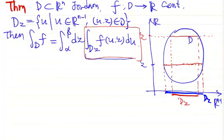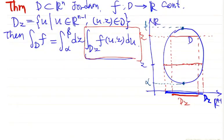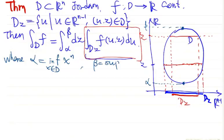What are alpha and beta? Alpha and beta naturally should be the lowest and highest points of the domain D. So this is our alpha and this is our beta. More explicitly, alpha is the infimum of the last coordinate over every point in D, and beta is the supremum.